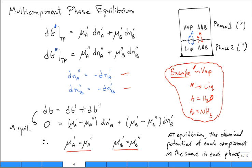So again, a good example is think of vapor-liquid, and maybe A would be water and B would be ammonia. So a water-ammonia mixture, that's two phase.